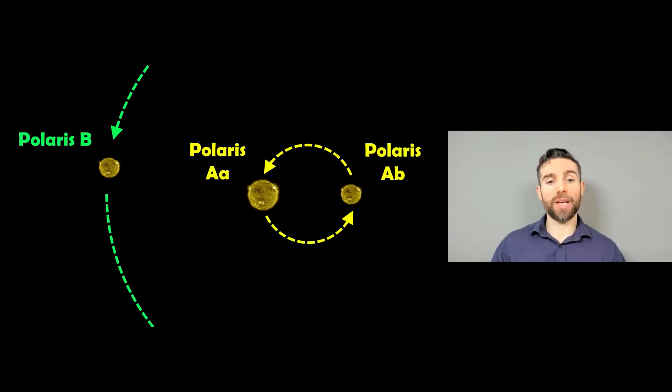And then you have a smaller Polaris B orbiting around the outside. So you've got this triple star system, and Polaris B is quite small. It's also quite far away from it as well. Now this illustration just gives you the general idea where the orbits are, but they're not to scale. So Polaris B would actually be quite a distance from the other two.